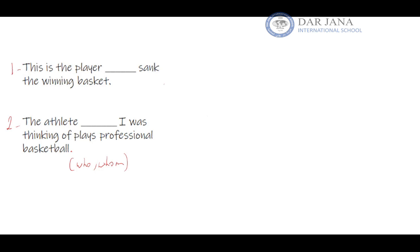In the first sentence, 'This is the player who sank the winning basket,' we need to use 'who' and not 'whom.' In the second sentence, 'The athlete whom I was thinking of plays professional basketball,' we use 'whom.' So why would we use 'who' in sentence one and 'whom' in sentence two? We're going to find out throughout this lesson.